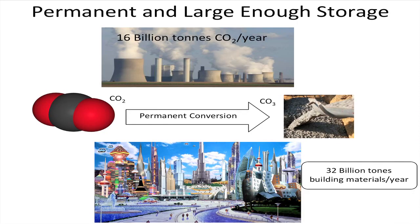The only reservoir on the planet that's sustainable is the built environment. We use about 30 to 40 billion tons of building materials every year. We mine 32 billion tons of rock alone that goes into road base, asphalt, and concrete. Concrete is the most traded material other than water in the world — more than 50% of all building materials. You can take 16 billion tons of carbon dioxide and turn it into about 32 billion tons of building materials, making it a reservoir where we can do this sustainably for years to come.